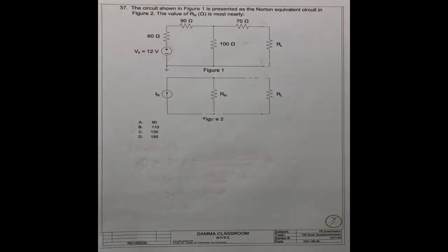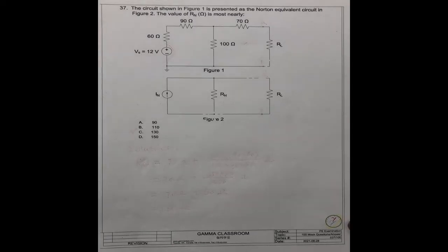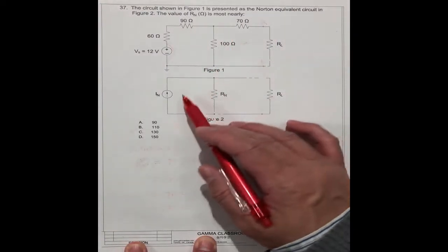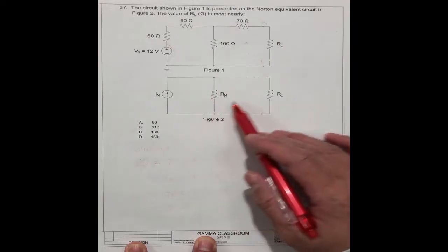Question 37. The circuit shown in Figure 1 is presented as the low-term equivalent circuit in Figure 2. The value of Rm is most nearly what number? So this is for the circuit, and this is for the low-term equivalent circuit.